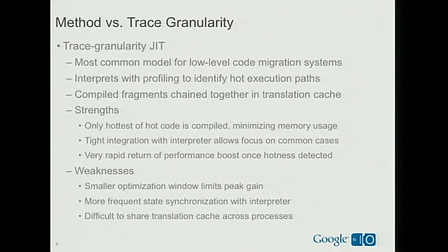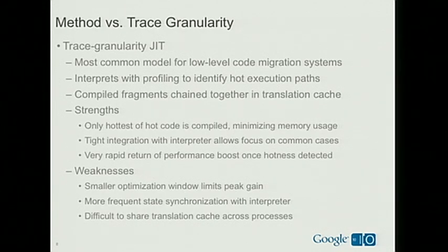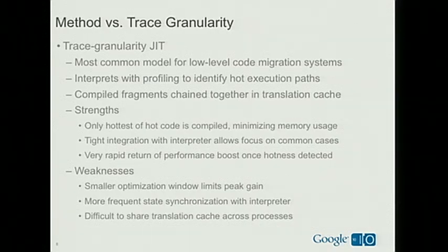The primary downside in a trace-based system relates to the window of optimization. You don't have a good view of the world outside the trace when you're optimizing it — you can only optimize within it, so you have to make worst-case assumptions with some optimizations. Also, since you're popping back and forth more frequently with the interpreter, if there's an extra cost associated with making that transition, you'll pay it more often. Finally, these code fragments are continually changing, making it very difficult to share them across processes, and even challenging to share them among threads within a process.